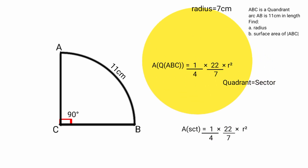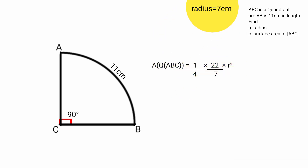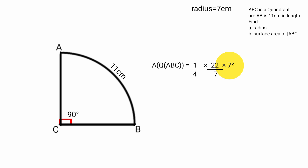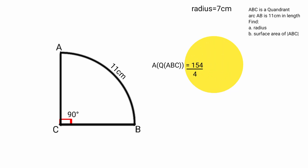Substituting, the area of the quadrant equals 1 over 4 times 22 over 7 times R squared, where R equals 7 centimeters. So area of quadrant equals 1 over 4 times 22 over 7 times 7 squared. Here 7 squared is 7 times 7, and this 7 cancels with the 7 in the denominator, giving 1 times 22 times 7 equals 154. So area of quadrant equals 154 over 4, which is 38.5 centimeters squared.